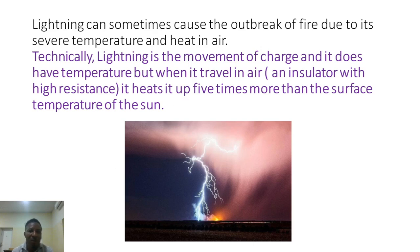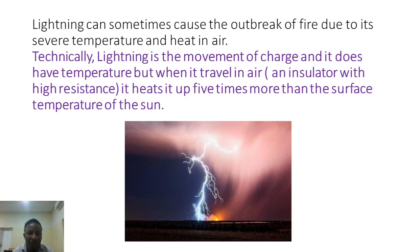Lightning can sometimes cause the outbreak of fire due to its severe temperature and heat in air. Technically, lightning is a movement of charge — the movement of electrons. Electrons don't have temperature, but when they travel through air, which is an insulator, it heats it up. It heats the air to five times the temperature of the sun, which is why lightning is very dangerous and can cause serious fire outbreak or even death if somebody is struck.